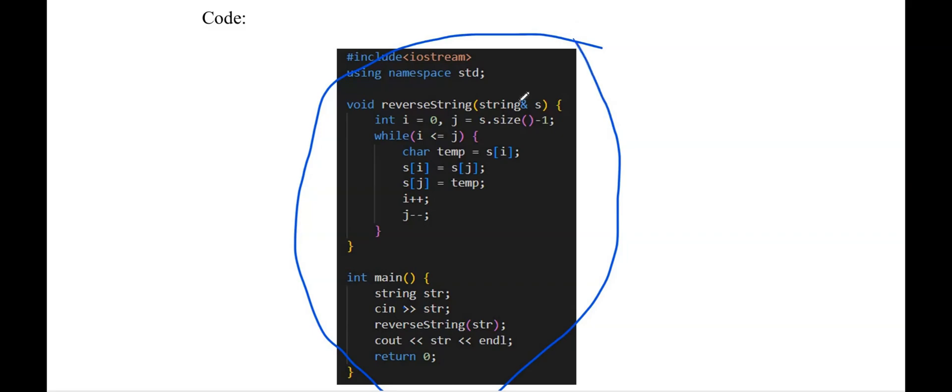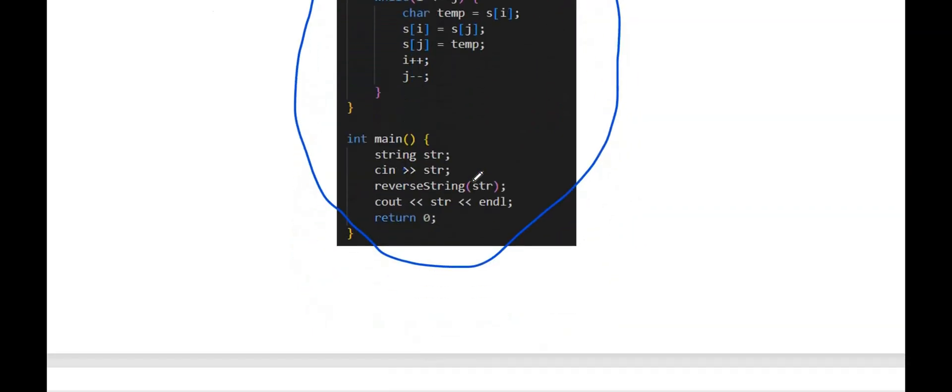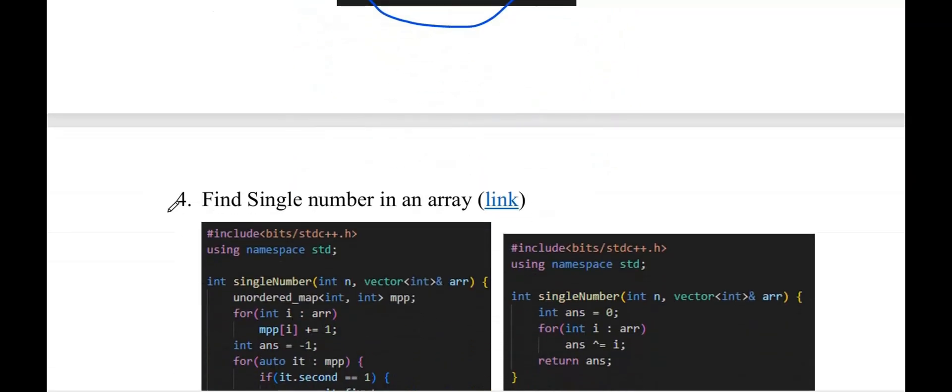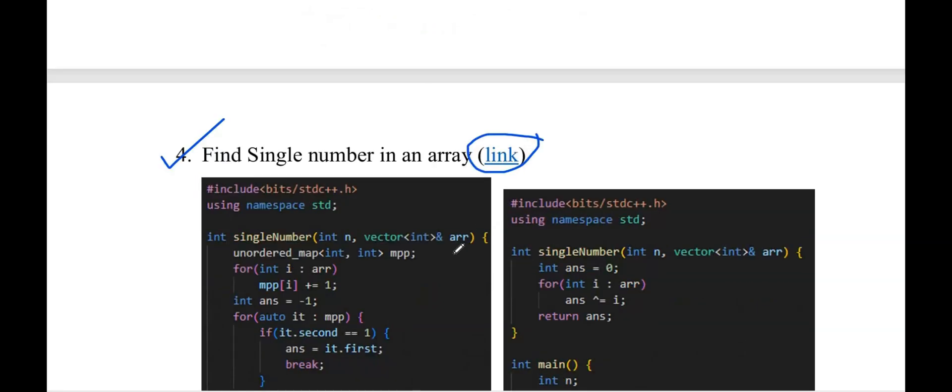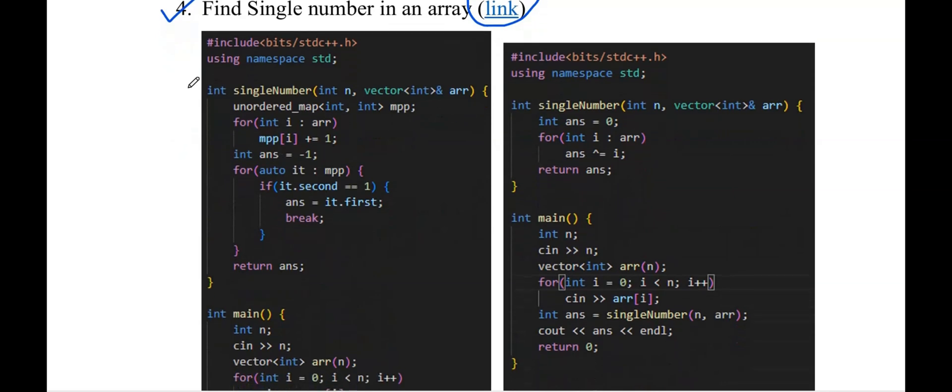The second problem was to find a single number in an array. The link to the problem is attached. I have provided two codes for this problem with the time complexities of each. The second code uses the XOR operation, which is quite efficient.